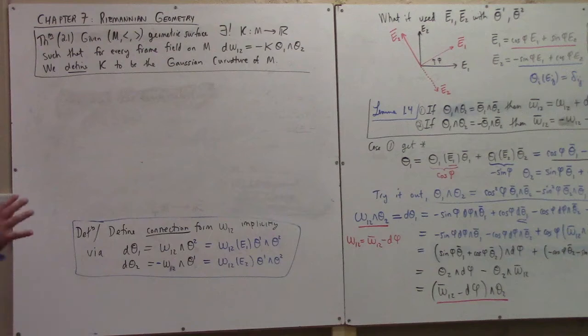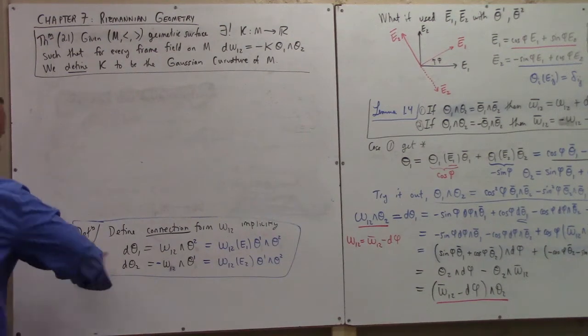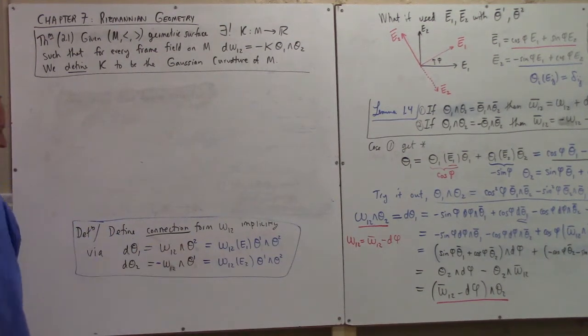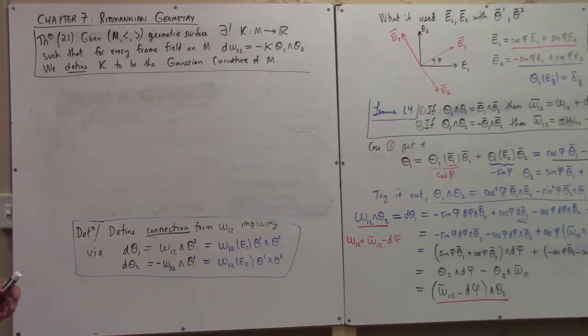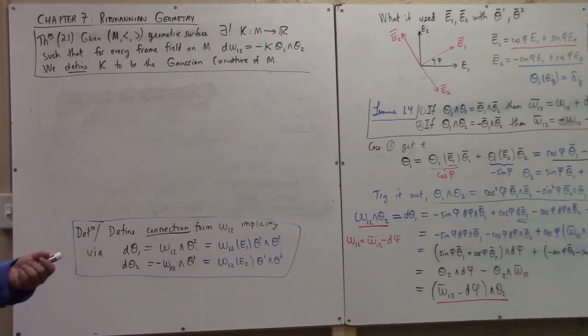Here we're defining omega 1,2 in terms of the definition we just studied, and we already know how it works out. If you pick any two frame fields, we know how they relate.